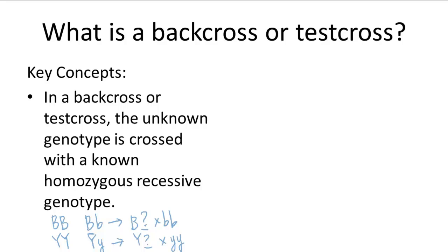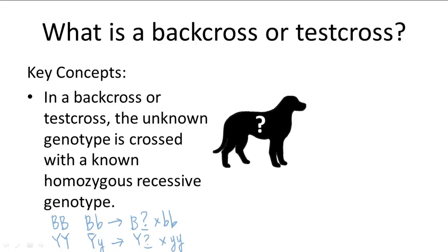So here's another example that's more detailed, using dog fur. A dog breeder wants to know whether his black dog has homozygous black fur, big B, big B, or heterozygous black fur, big B, little B. And so he crosses it with a homozygous brown fur dog.